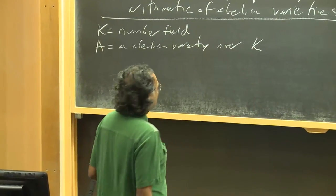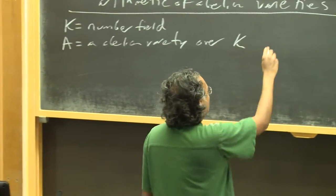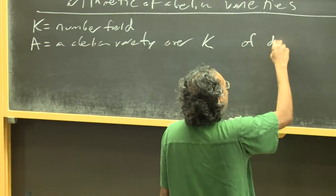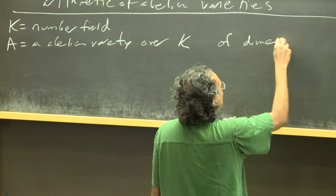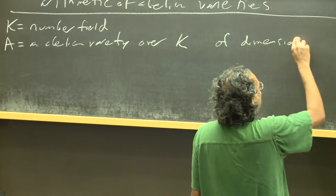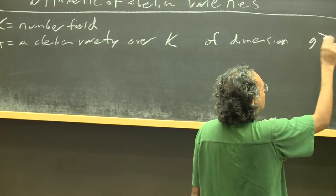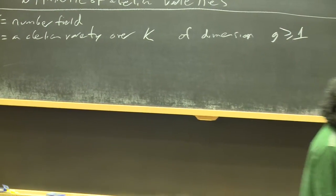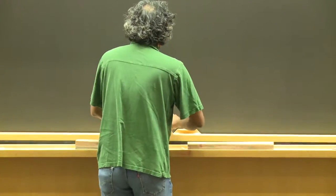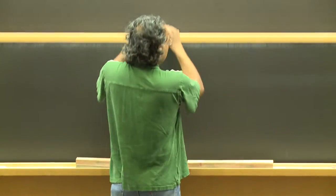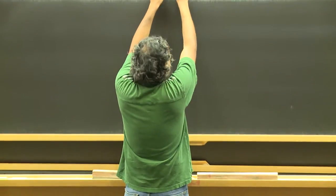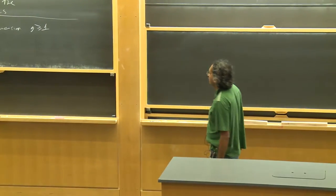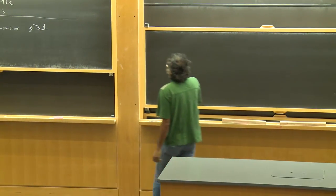So A is always going to be an abelian variety over k of dimension g, at least 1.